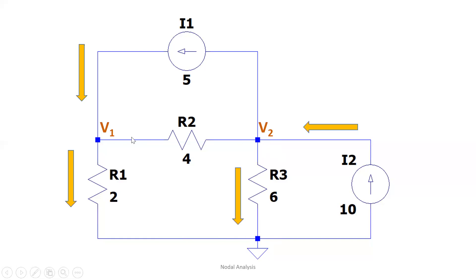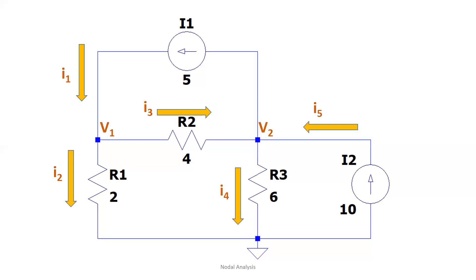For the branch between V1 and V2, we don't know the values of V1 or V2, so we cannot compare which is higher in magnitude. We assume a current direction — as long as you are consistent in your computations. I will assume current flows from V1 to V2, meaning V1 is at higher potential with respect to V2. So let's label all five branch currents.